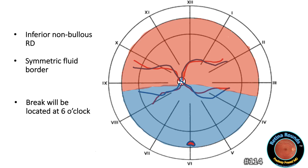There are modifications to Linkoff's Rules. For an inferior non-bolus retinal detachment with a roughly symmetric fluid border — unlike the asymmetric case in rule number three — you can expect the break to be located at the 6 o'clock position.